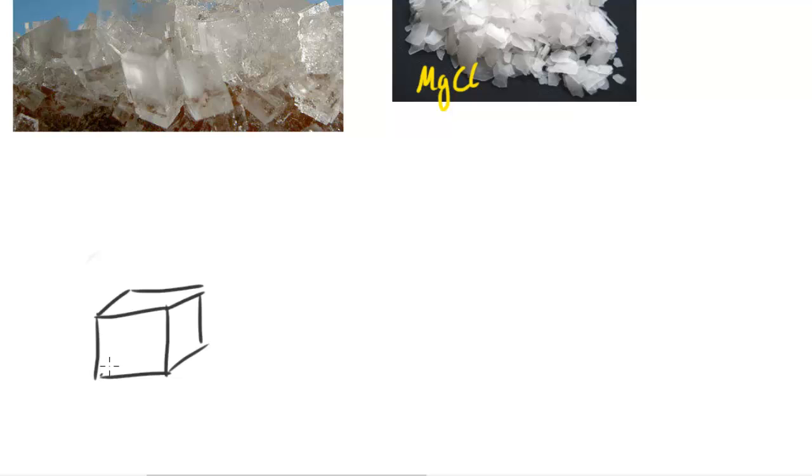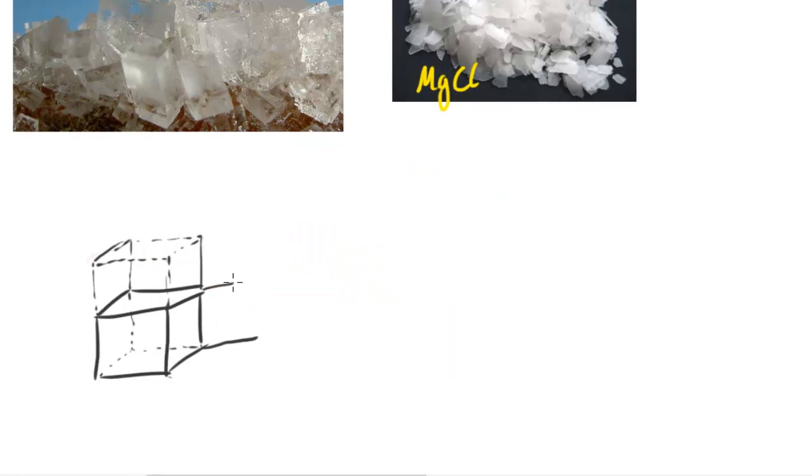So I've got a cube here, and then inside the cube we've got that part. Then this cube repeats, so it's a repeating structure. We're going to have more cubes here and more cubes, so this goes along. At the corners of this, I'm gonna draw the structure—I'm gonna draw the ions.